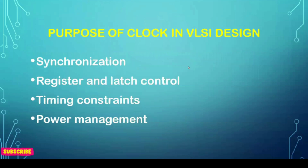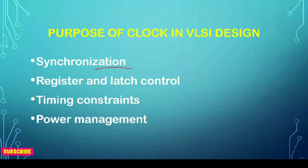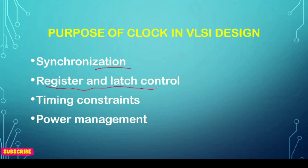Now we'll see the purpose of using a clock in VLSI design. First is synchronization — all the sequential and combinational circuits within the IC rely on the clock signal to synchronize their operation and ensure proper timing. The second one is register and latch control. Registers and latches are used to store data, so a clock signal controls the operation of flip-flops, registers, and latches, determining when data is to be stored and when it is to be transferred.